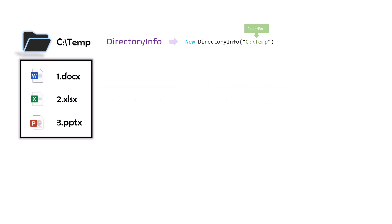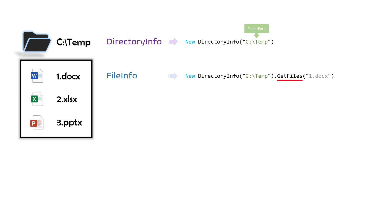Assume we have the following files in this folder. Each file is a FileInfo. We can get a specific file using the following statement — I use the same DirectoryInfo definition and then the GetFiles function, which is a method of DirectoryInfo. In the brackets I write the exact file name, and in this way I will get only that specific file.